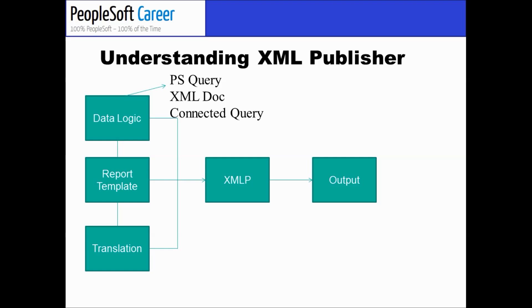You create a data source as your first step — write your query, then do everything online within the PeopleSoft internet architecture through your browser. No tools, no App Designer. Then create your report template outside of PeopleSoft using Microsoft Word, with the XML Publisher add-in showing up as a menu item in Word. Drag and drop fields, format your document, and save it as RTF. Then go to the PeopleSoft page where you create a report definition, upload that template, save it, and you're able to run and produce an XML Publisher output report with a click of a button. It's really that simple.